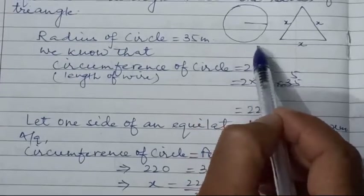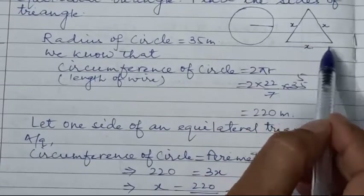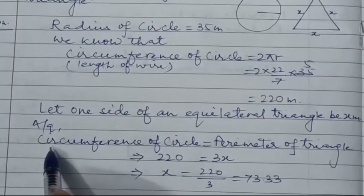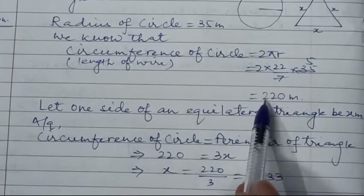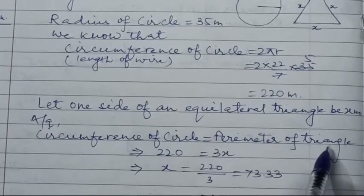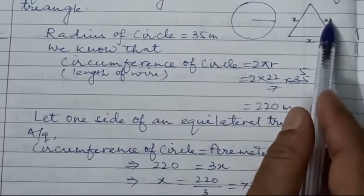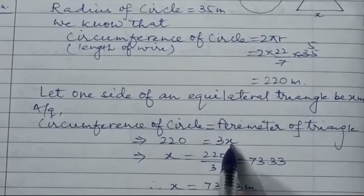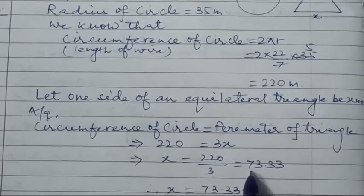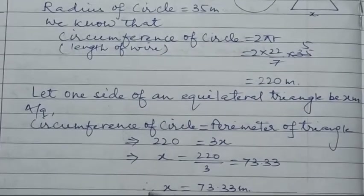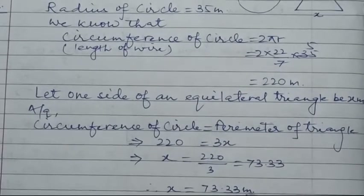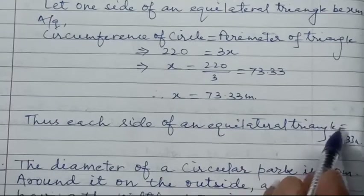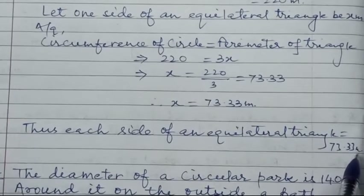According to the question, circumference of circle equals perimeter of triangle, because the length of wire is the same for both. Circumference = 220 meters, and perimeter of equilateral triangle = 3x. So 220 = 3x, therefore x = 220 ÷ 3 = 73.33 meters. Thus each side of the equilateral triangle is 73.33 meters.